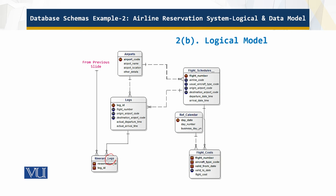We have the itinerary legs, where the leg has a flight number — which is actually the leg number — and this is the foreign key. We have the origin airport and the destination airport; the leg goes from airport A1 to A2 to A3. Then we have flight schedules — an airport can have many flight schedules, with departure date and arrival date. Then there are flight costs with a valid-to date. Aircraft type and code are also included, which covers cost. There is also a reference to the calendar — day number, business day, and year — providing multiple ways of keeping track of time. This is how all the pieces fall together.